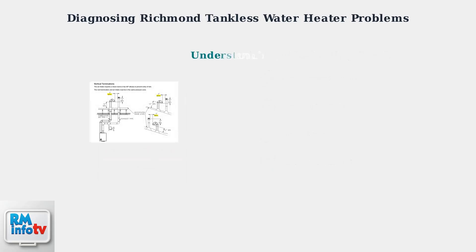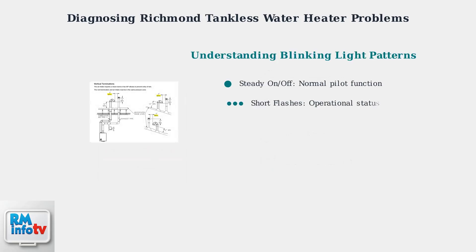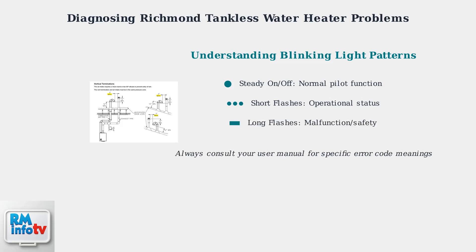Understanding blinking light patterns can also help diagnose issues. A steady on and off pattern typically indicates normal pilot light function, while short flashes may show various operational statuses. Long flashes often indicate malfunctions or safety switch activations. Remember to always consult your user manual for specific error code meanings and detailed troubleshooting procedures.